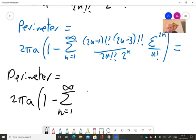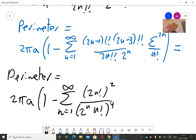So what we have is 2 pi a times 1 minus sum from n equals 1 to infinity. In the numerator we have 2n factorial squared, and in the denominator we have 2 to the power 2n times n factorial squared, and in addition we have 2n minus 1, epsilon to the 2n. And that's it. A very nice formula for the perimeter.